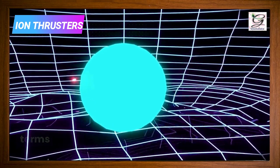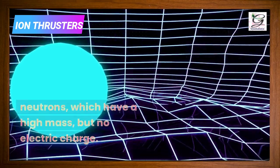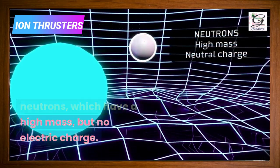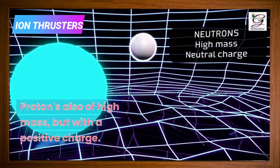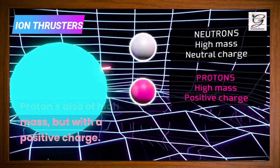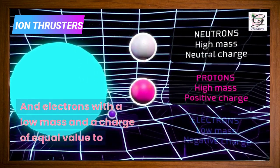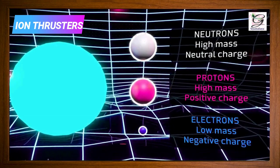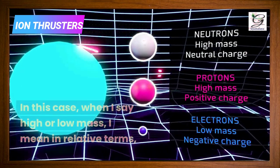An atom in simple terms is composed mainly of three subatomic particles: neutrons, which have high mass but no electric charge; protons, also of high mass but with a positive charge; and electrons, with low mass and a charge of equal value to that of the proton, but negative.